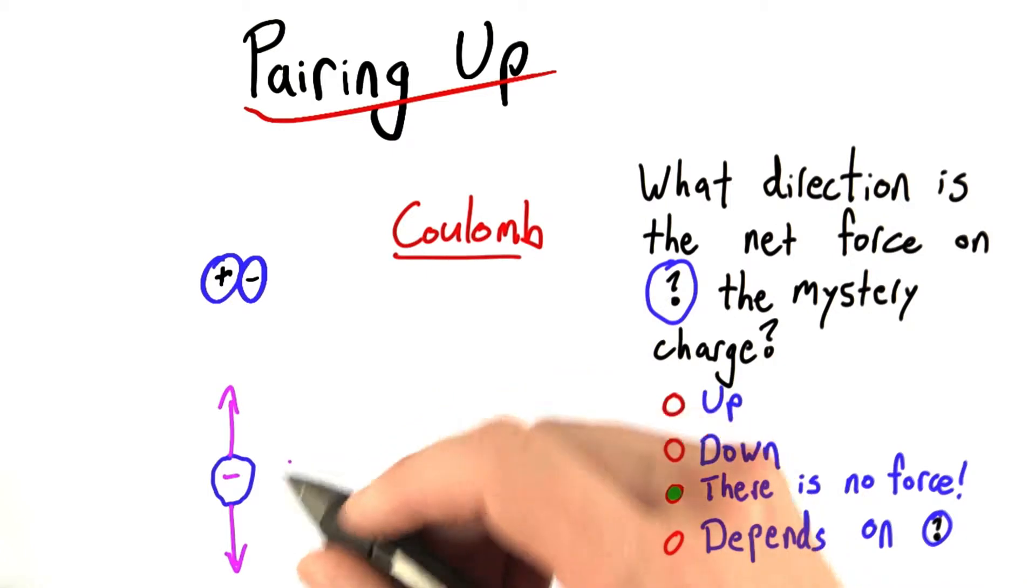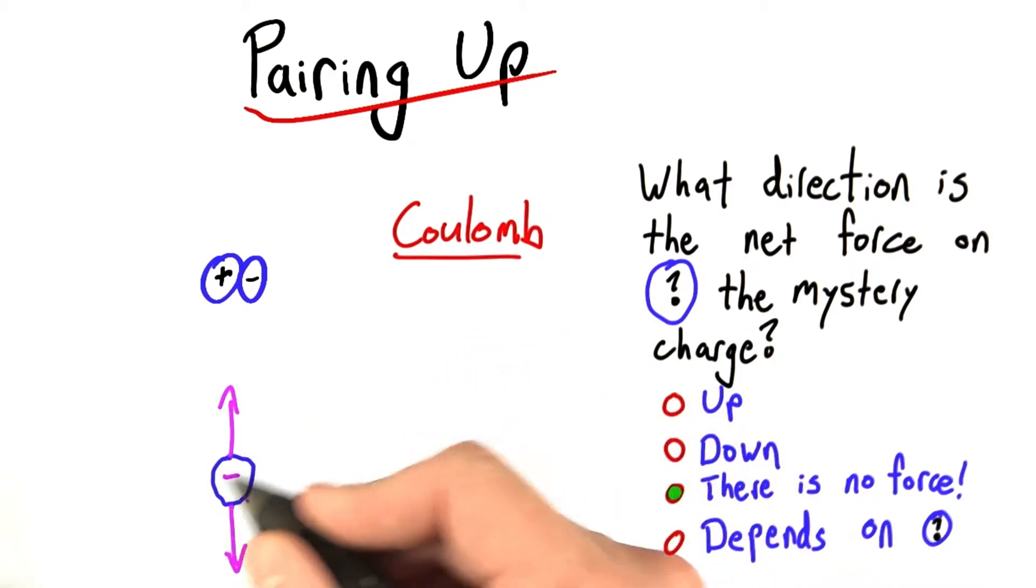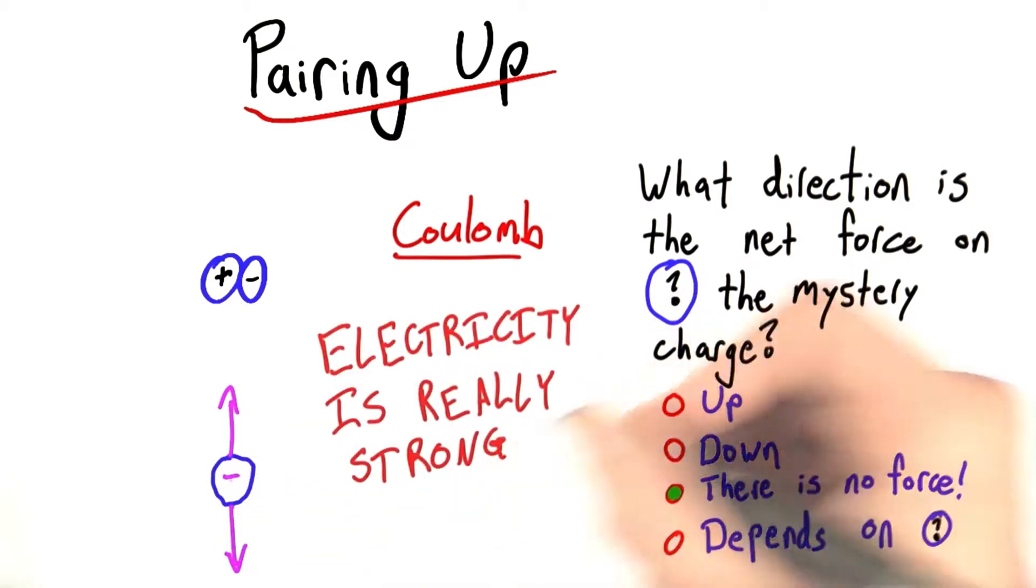In fact, you almost never find isolated charges like this in nature. And why not? Because electricity is really, really, really strong. It's a super strong force compared to gravity. Man, gravity is so weak compared to electricity.